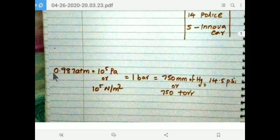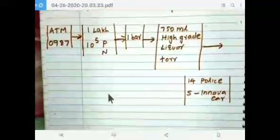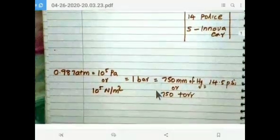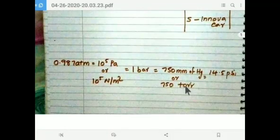But here, 0.987 ATM is equal to 750 mm of Hg. But if it is 1 ATM, then 760 mm of Hg. Then next, that liquor name is Tor. 750 ml high grade liquor, that liquor name is Tor. So that is 750 Tor. 750 mm of Hg is equal to 750 Tor.